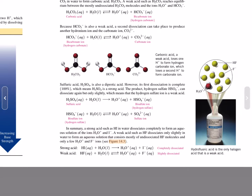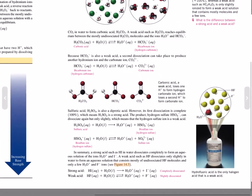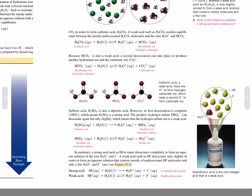Sulfuric acid, H₂SO₄, is also diprotic. However, its first dissociation is complete, which means that H₂SO₄, sulfuric acid, is a strong acid. The product hydrogen sulfate can dissociate again but only slightly, which means that the hydrogen sulfate ion is a weak acid.